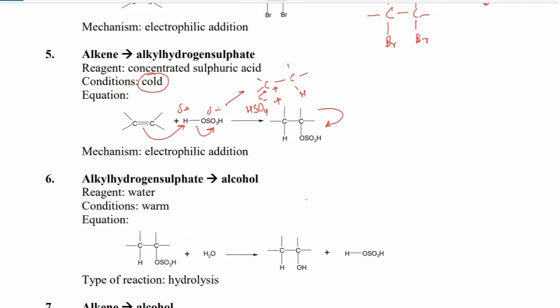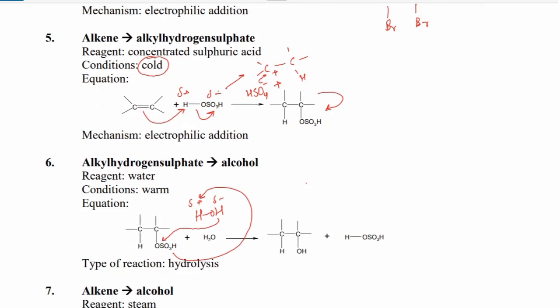If we then take the alkyl hydrogen sulfate through hydrolysis with water, it becomes an alcohol. Water has a partial negative oxygen and partial positive hydrogen. The hydroxide effectively replaces the sulfate group, so OH has replaced it — this is hydrolysis, and it can also be called a nucleophilic substitution reaction because the nucleophile attacks.